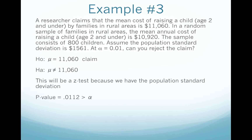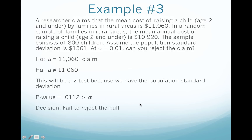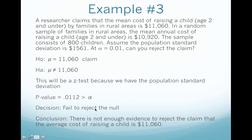We want to compare that to alpha. Alpha here is 1%, so 1.12% is bigger than 1% — our p-value is greater than alpha. Our decision is to fail to reject the null. The null is the claim and we fail to reject it, so there is not enough evidence to reject the claim that the average cost of raising a child is $11,060.